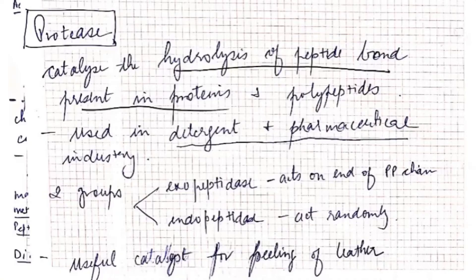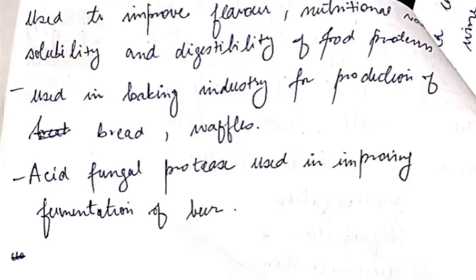The next enzyme is protease. It is used to catalyze the hydrolysis of peptide bonds present in proteins and polypeptides. It is used in detergent and pharmaceutical industries. It is of two types: exopeptidase and endopeptidase. It is a useful catalyst for peeling of leather as well. It is used to improve the flavor, nutritional value, solubility, and digestibility of food proteins. It is also used in the baking industry for production of bread and waffles. Acid fungal protease is used in improving fermentation of beer.